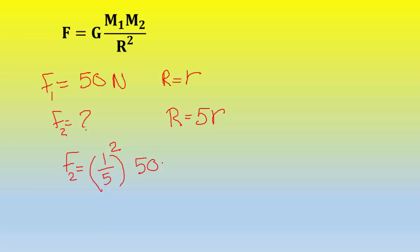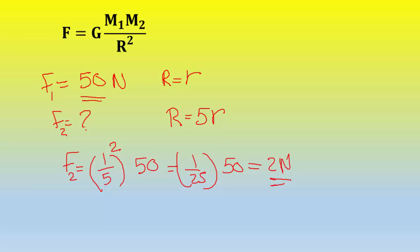So f2 equals (1/5)² times 50 Newtons. (1/5)² is 1/25, times 50 Newtons, which yields 2 Newtons. So the force has decreased from 50 Newtons to 2 Newtons when you increase the distance between the two objects five times.